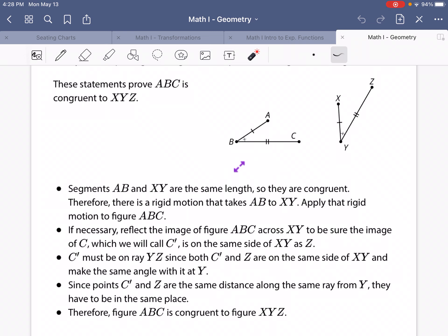The point is, since this angle and that angle are congruent, and that length and that length are congruent to these, we can slide this whole thing over so that it matches up perfectly. And we can see that this figure is congruent to this figure.